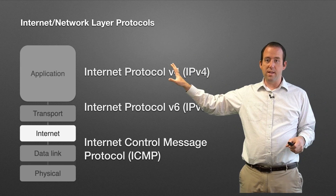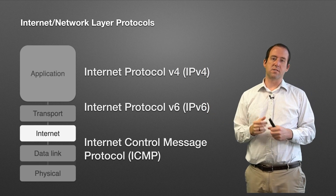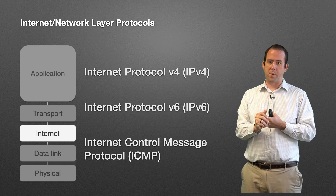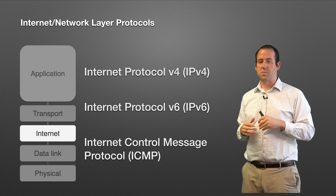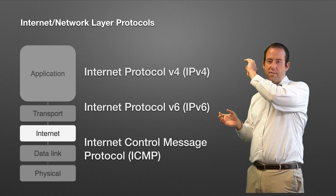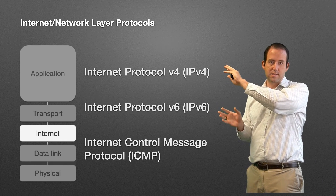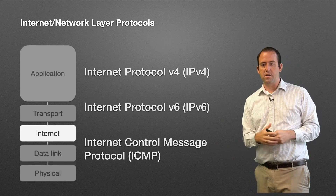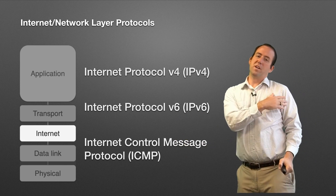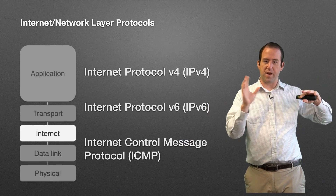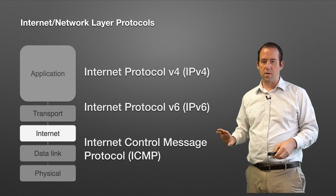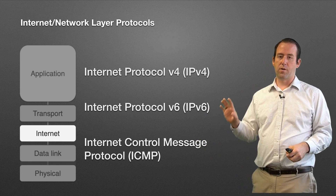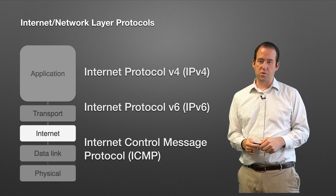Protocols at the internet layer include the Internet Protocol — IP. IPv4 and IPv6 are two different internet layer protocols that perform similar responsibilities in different ways. There's also the Internet Control Message Protocol, or ICMP, plus others related to routing and path-finding. ICMP is the protocol that contains ping — so if you've ever pinged a server, that's using the Internet Control Message Protocol.